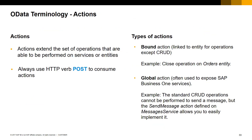Let's see more OData terminology — in this case, actions. Actions expose and extend the set of operations beyond the create, retrieve, update, and delete operations available on each specific entity or service. There are two types of actions: bound actions and global actions. Bound actions are linked to entities and expose other operations than CRUD for the specific entity. An example of a bound action is the close operation to close a specific order entity so no more changes will be allowed on that order. Global actions represent specific operations other than CRUD that are not linked to an entity.